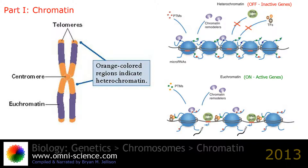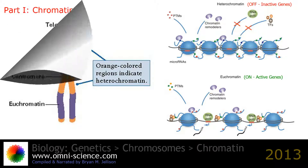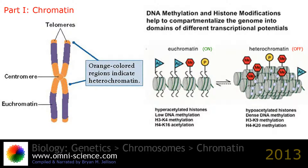DNA-coding genes that are actively transcribed — which are turned on — are more loosely packaged and are found associated with RNA polymerases, referred to as euchromatin. While DNA-coding inactive genes, which are turned off, are found associated with the structural proteins and are more tightly packaged, known as heterochromatin.